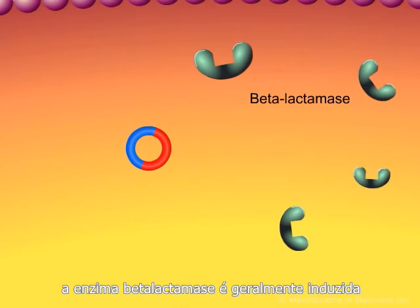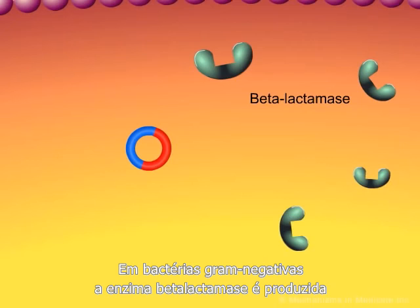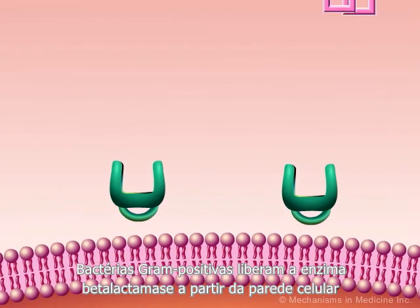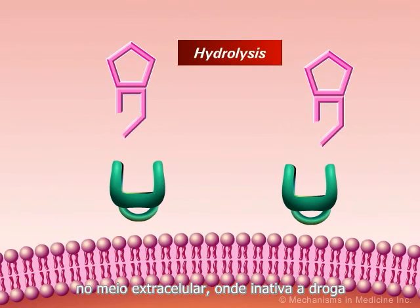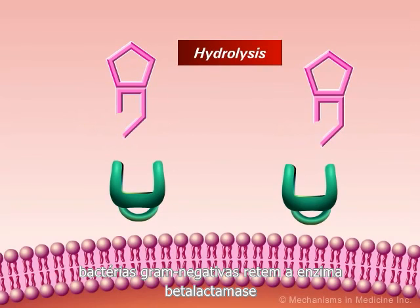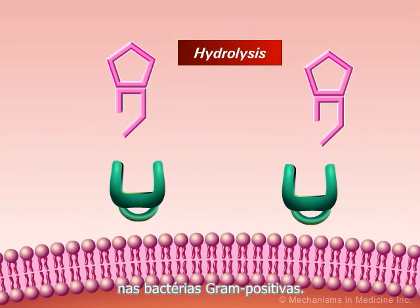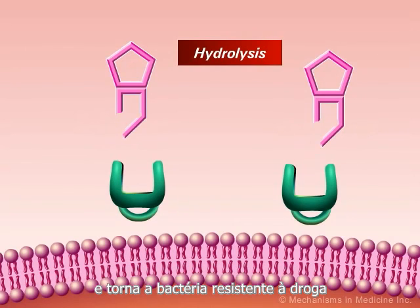In gram-positive bacteria, the beta-lactamase enzyme is generally inducible, resulting in a large amount of enzyme being produced in the presence of the drug. In gram-negative bacteria, the beta-lactam enzymes are produced constitutively — i.e., even when the antibiotic is not present. Gram-positive bacteria release the beta-lactamase enzyme from the cell into the extracellular environment, where it inactivates the drug before it enters the bacterial cell. In contrast, gram-negative bacteria retain the beta-lactamase enzyme within the periplasmic space, resulting in a more efficient mechanism than gram-positive bacteria. Ultimately, the destruction of the beta-lactam ring of the antibiotic renders it incapable of binding to the penicillin-binding protein, and thus the bacteria become resistant to that drug or class of drugs.